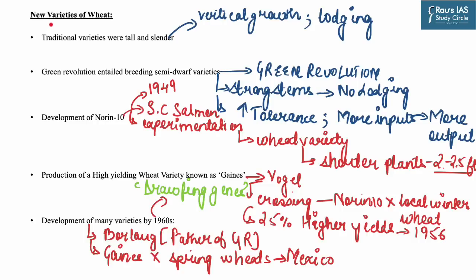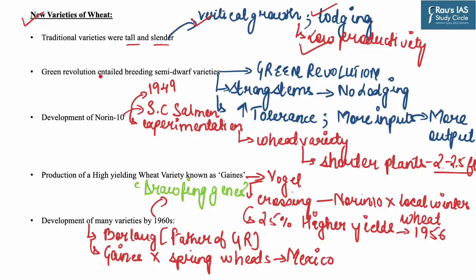The article talks about new varieties of wheat that led to the Green Revolution. Traditional wheat and rice varieties were tall and slender. They showed vertical growth on the application of fertilizers and water, while lodging when their earheads were heavy with well-filled grains, resulting in low productivity. The Green Revolution entailed breeding semi-dwarf varieties with strong stems that didn't lodge. This variety showed high tolerance for high fertilizer application — more inputs resulted in more outputs.